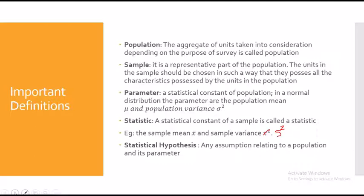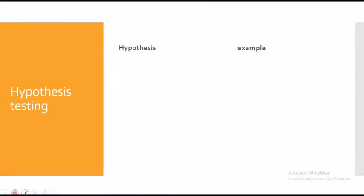Now let's move on to statistical hypothesis. A statistical hypothesis is any assumption relating to a population and its parameters. Hypothesis testing begins with an assumption — called a hypothesis — that we make about a population parameter. A hypothesis is a supposition made as a basis for reasoning; it is simply a quantitative statement about a population parameter.